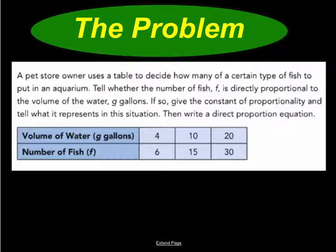Now it seems that there's a lot of stuff going on in this problem, but it's not hard to do. You just got to follow it step by step and do one thing at a time. The first thing that it's asking is to tell whether the number of fish F is directly proportional to the volume of water G.